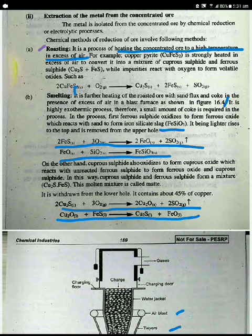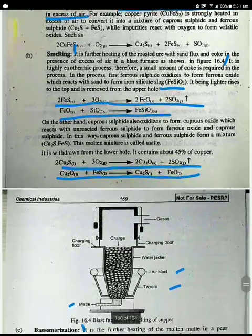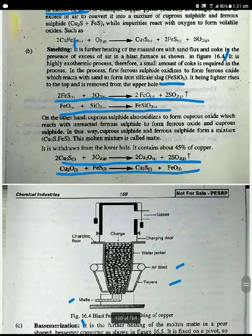This molten mixture is called matte. So, the reactions we have two. We will write about two reactions of copper sulfide.